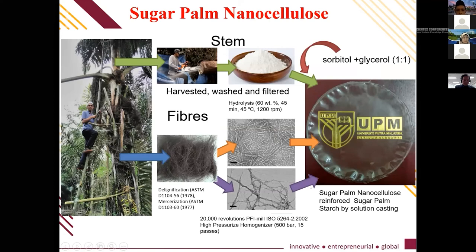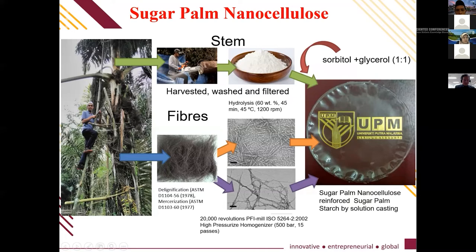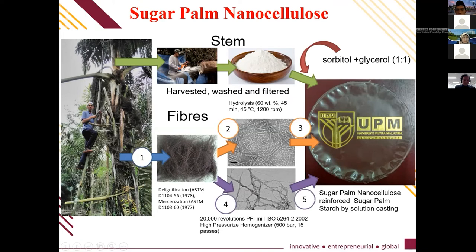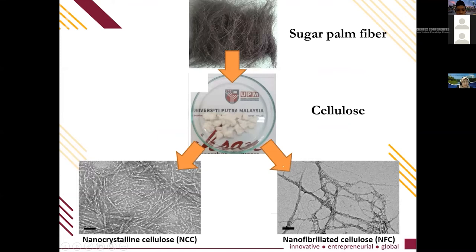For sugar palm nanocellulose, the process involves delignification and mercerization. Using acid hydrolysis treatment, I obtained nanocrystalline cellulose with optimal conditions of 45°C and 45 minutes. For nanofibrillated cellulose, I used a high-pressure homogenizer with optimal pressure of 500 bar and 15 passes. Additionally, I combined and reinforced this sugar palm nanocellulose with starch to produce biodegradable sugar palm nanocellulose-reinforced sugar palm starch using the solution casting method.